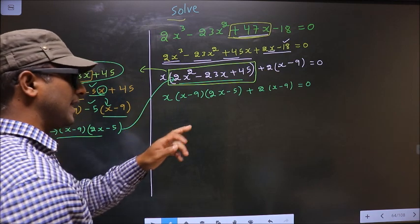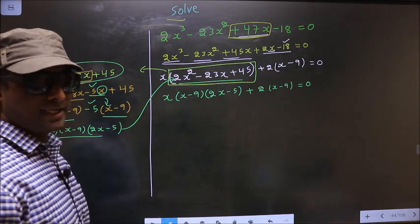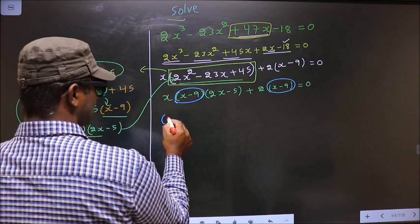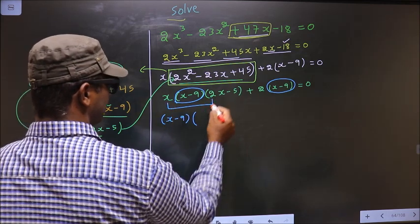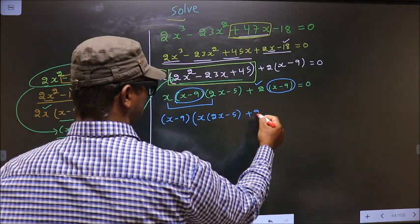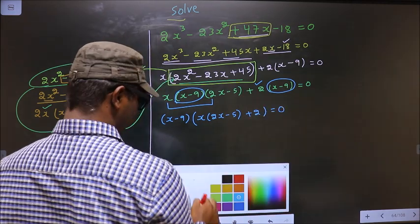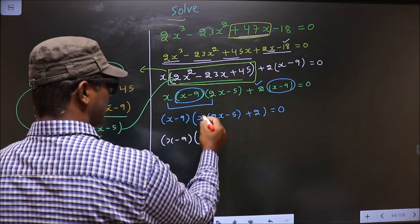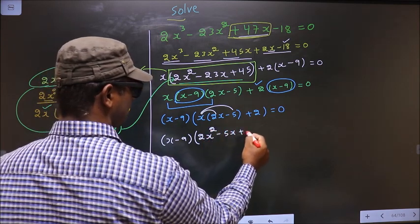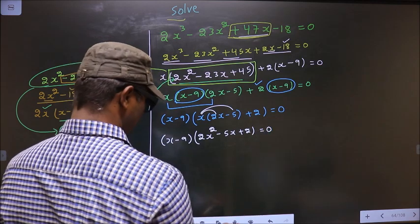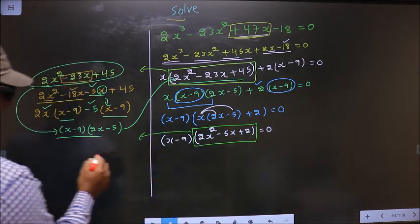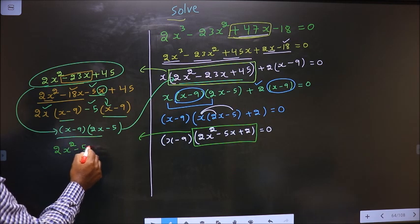Now from this entire equation, what can be taken out common is x minus 9. So x minus 9 outside — here you will be left with x times 2x minus 5, and here plus 2, equal to 0. Now x minus 9, and here you open up the bracket to get 2x squared minus 5x plus 2, equal to 0. We got another quadratic, so I will factorize this quadratic.